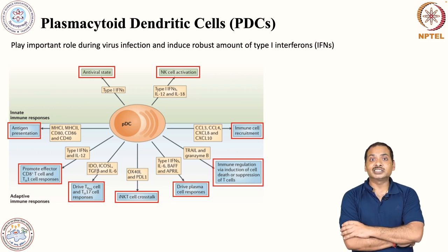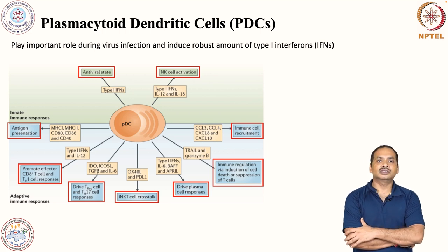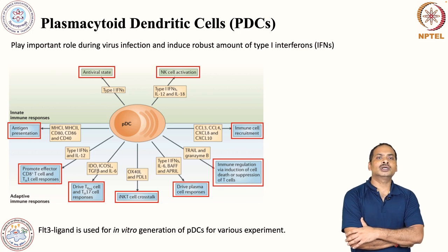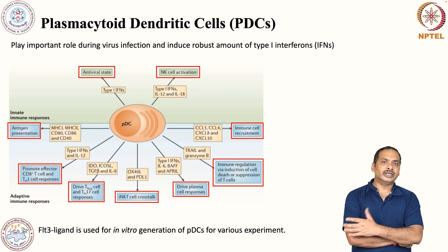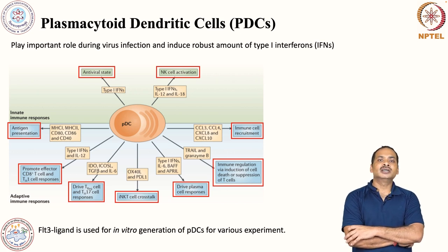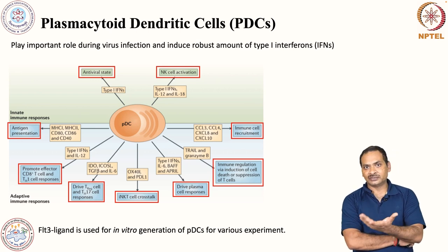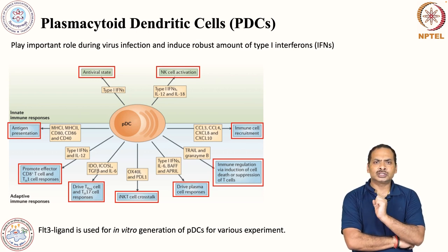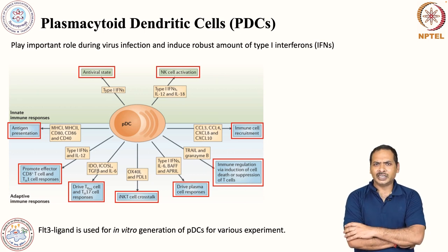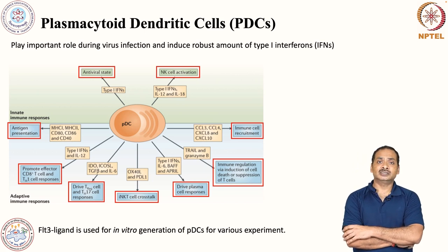We can also generate plasmacytoid dendritic cells in the laboratory. For this, we use a cytokine called FLT3 ligand. If you stimulate bone marrow-derived cells with this cytokine, these cells will differentiate into plasmacytoid dendritic cells.